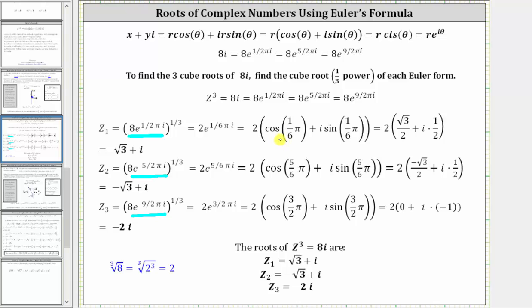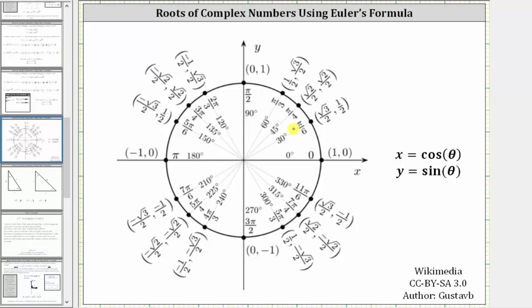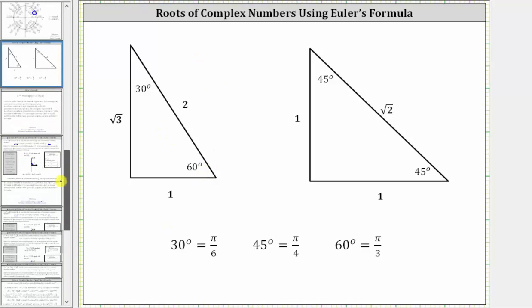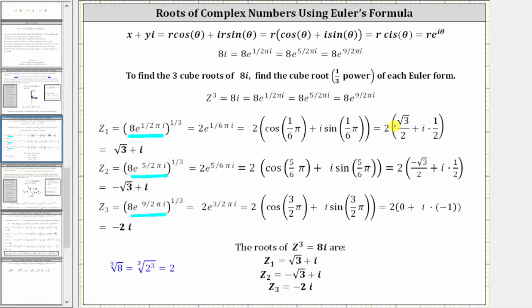We evaluate the trig function values using the unit circle or reference triangles. The terminal side for theta equals π/6 gives us cosine(π/6) = √3/2 and sine(π/6) = 1/2. We can also use the 30-60-90 reference triangle. This gives us 2 times (√3/2 + i·(1/2)). Distributing the 2, our first complex solution is √3 + i.